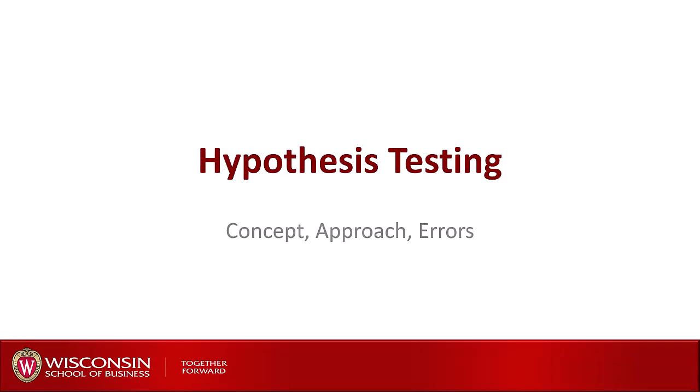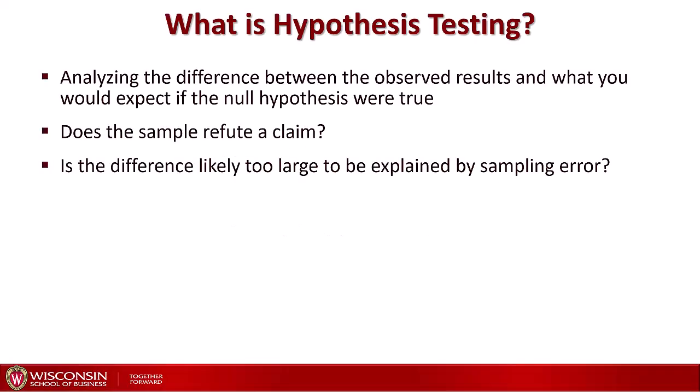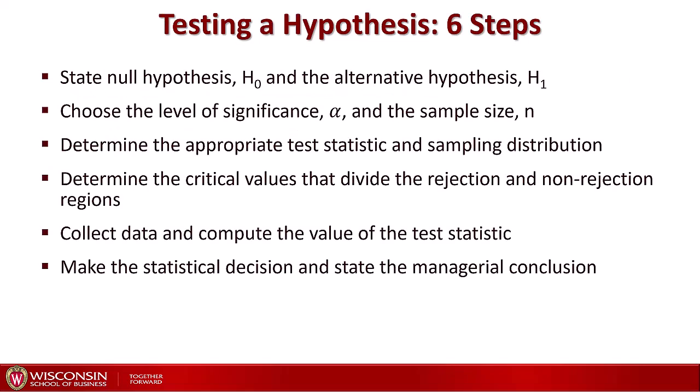In this video we are going to talk about hypothesis testing: the concept, how we approach it, and the potential errors associated with it. Hypothesis testing will be really important when we cover regression, especially relative to p-values and confidence intervals. Hypothesis testing is analyzing the difference between the observed results from our data and what you would expect to see if the null hypothesis were true. Does the sample refute a claim? Do we have sufficient evidence to say with confidence that something is likely not true? We do that by looking at the statistical properties of the sample and asking if the difference is likely too large to be explained by sampling error or random noise. There are six steps associated with hypothesis testing.